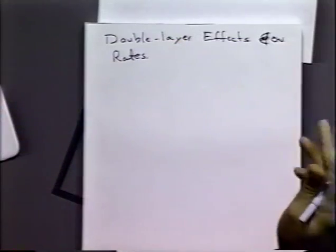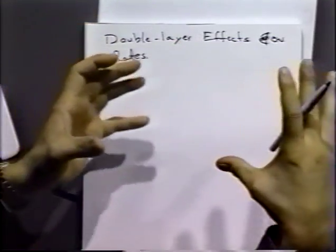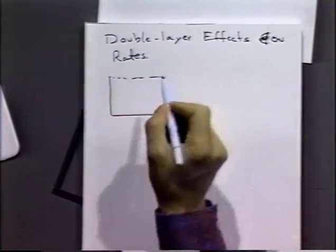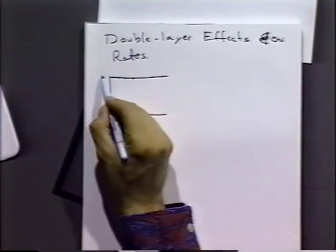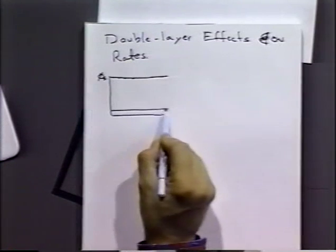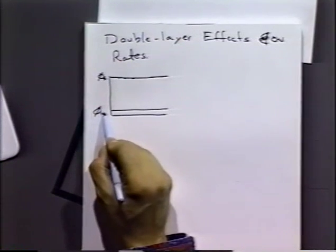When we talk about nonspecific adsorption, we're talking about molecules or ions that are moving close to the electrode. They're not stuck to the electrode; the minimum approach is the outer Helmholtz plane, and then they can be concentrated in the region near the electrode surface. Under these conditions you get a potential distribution characteristic of the potential of the solution, so-called phi-s, and the potential of the metal, so-called phi-m.